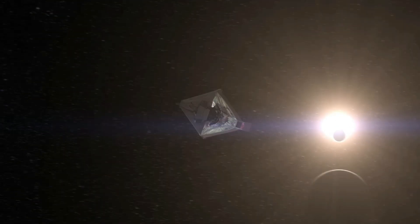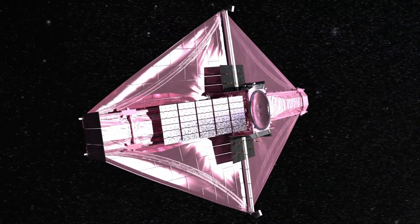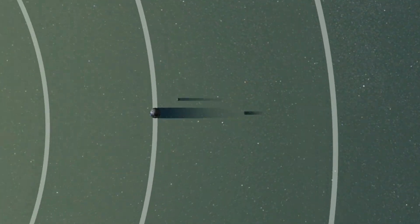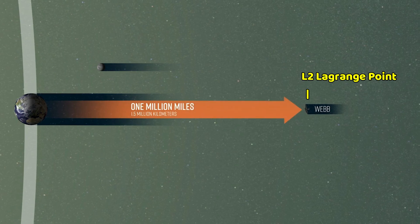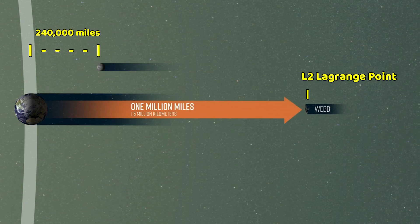But everything went perfectly, and after its successful deployment, James Webb arrived at the Sun-Earth L2 Lagrange point which is a million miles away from Earth, about four times the distance between Earth and the Moon.